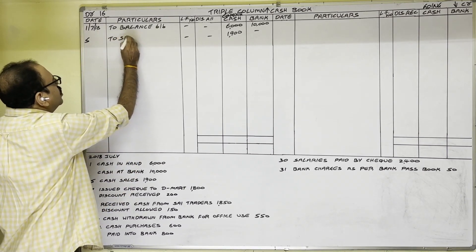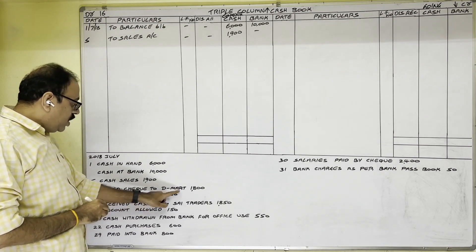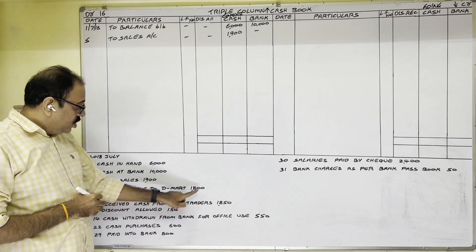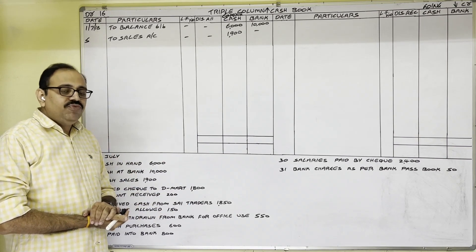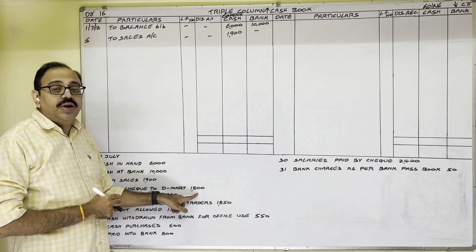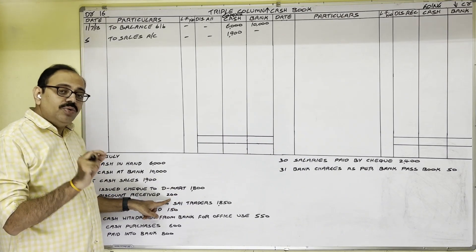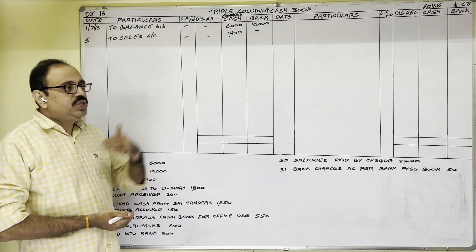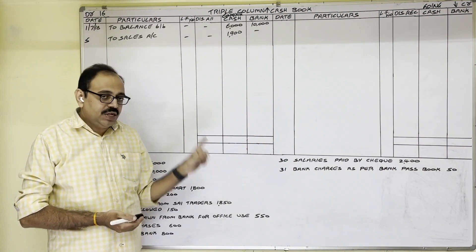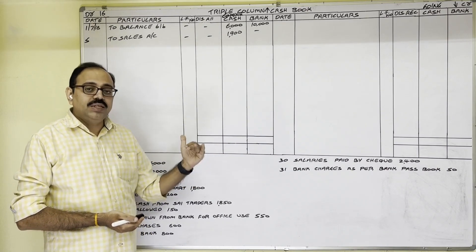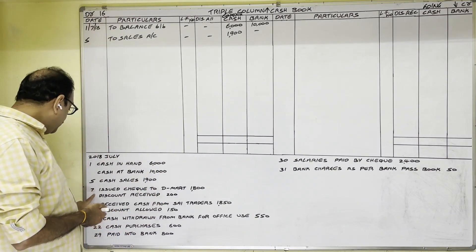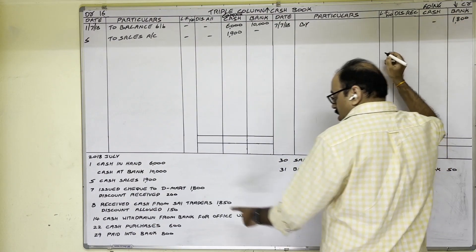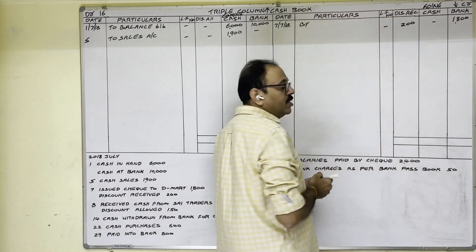7th date: issued cheque to Demart 1,800 rupees, discount received 200 rupees. Our firm had to give 2,000 rupees to Demart; as full settlement we gave a cheque of 1,800 rupees, so 200 is discount received. We issued a cheque to Demart — they go to our bank, present the cheque, and take money. Bank balance decreases, so credit side bank column: 7th date, cheque amount 1,800 in bank column, 200 rupees in discount column. In particulars, write Demart account.